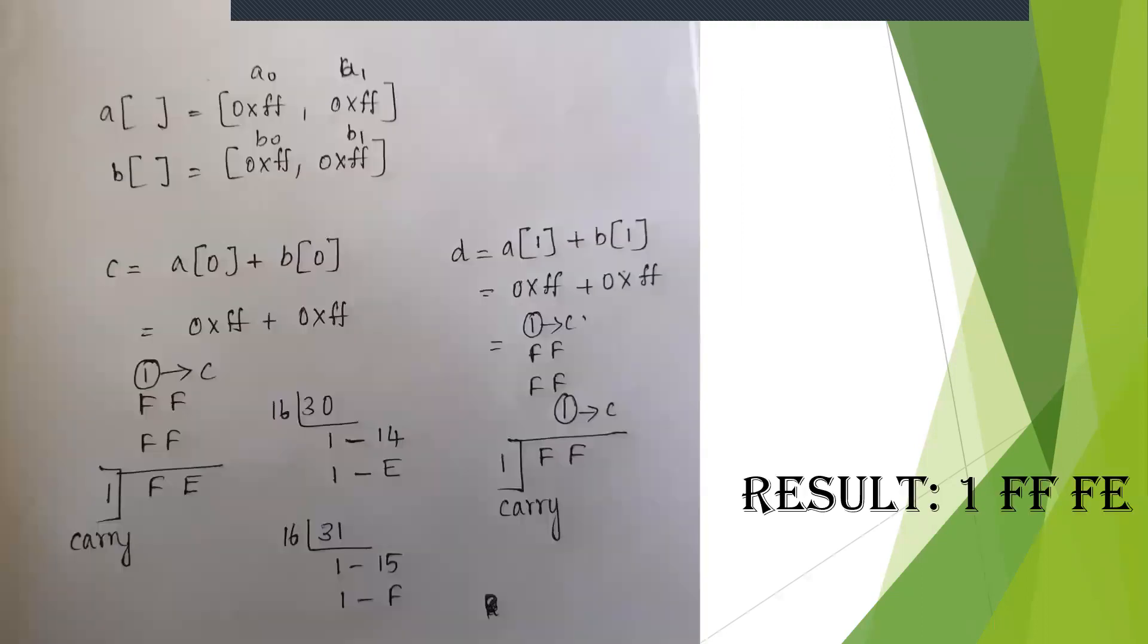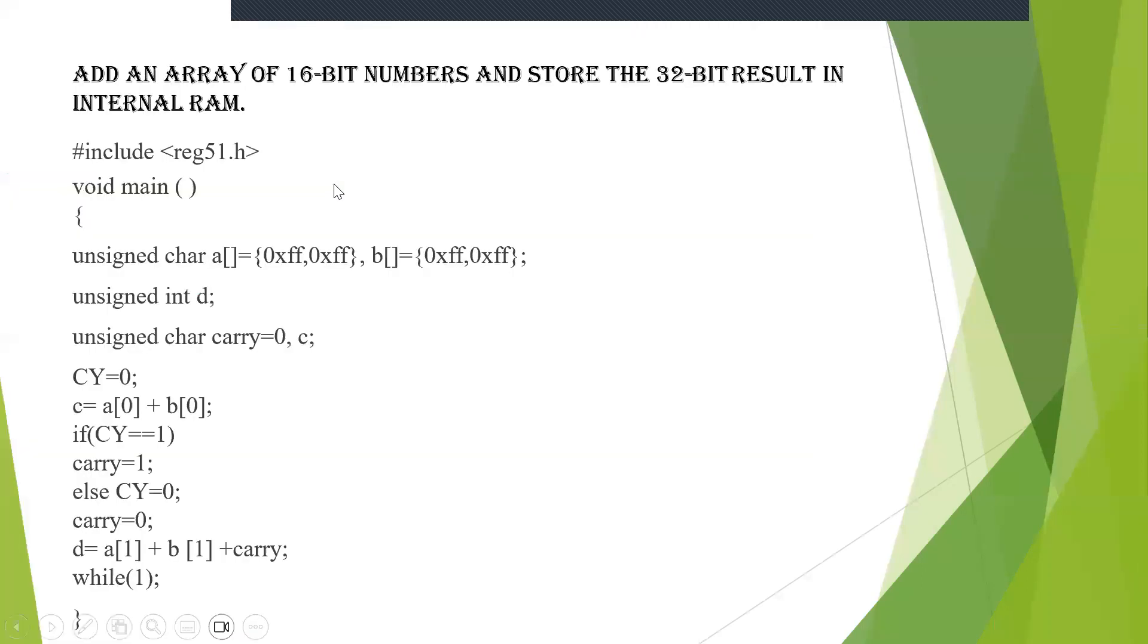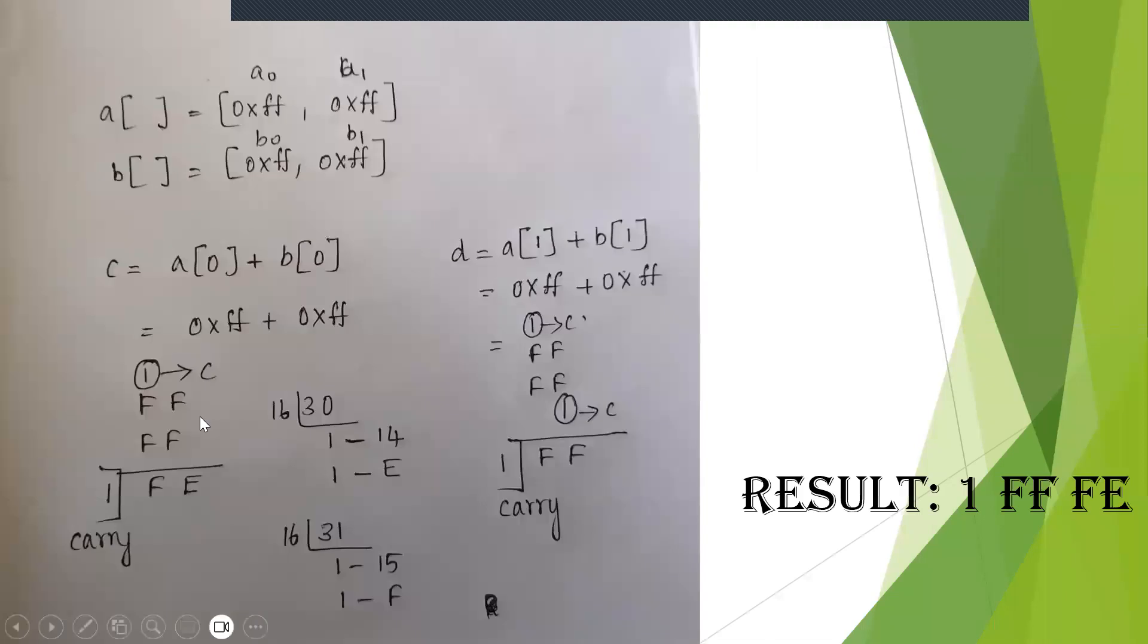In multiplication itself we have seen how a[0], b[0] we have done. Here you can see this is the set of values: a[0], a[1], b[0], b[1]. Now what is the command they have given? c = a[0] + b[0]. See here, c = a[0] + b[0] is nothing but 0xFF + 0xFF. Now adding 0xFF, the F is nothing but 15. So 15 + 15 is nothing but 30. 30 is not a hexadecimal value, so you're converting...